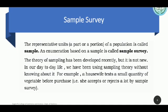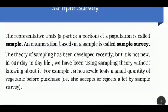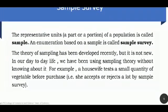The next method is sample survey. A sample is the representative unit — a part or a portion of a population. An enumeration based on a sample is called sample survey. The theory of sampling has been developed recently, but it is not new. In our day-to-day life, we have been using sampling theory without knowing about it.